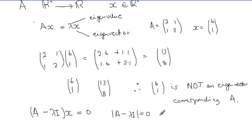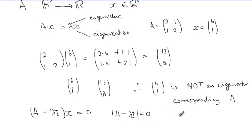That determinant condition gives us the characteristic equation, which is expressed in terms of lambda and has degree equal to the order n of the matrix. By solving this characteristic equation we obtain the n eigenvalues of the matrix.